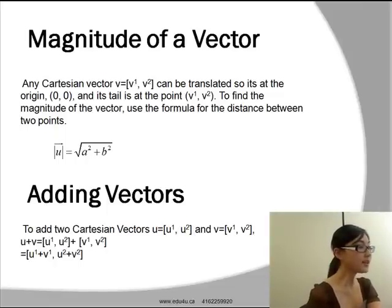Magnitude of a vector. Any Cartesian vector v=[v¹,v²] can be translated so it is at the origin, and its tail is at the point (v¹,v²). To find the magnitude of the vector, use the formula for distance between two points. The magnitude |u| = √(a²+b²), keeping in mind that a is the x value for the head of vector u, and b is the y value for the head of vector u.